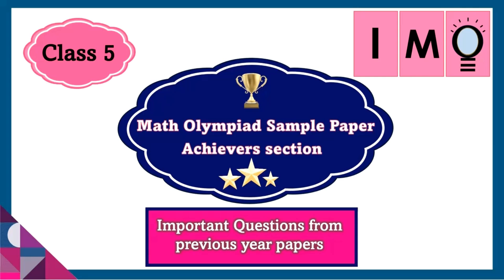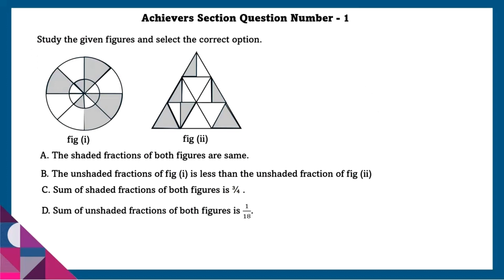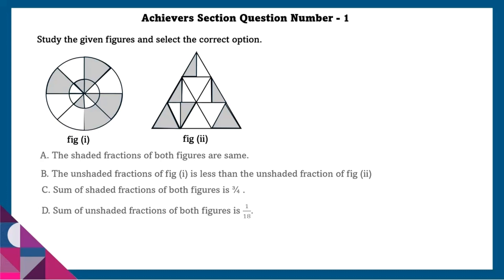Today we are going to be seeing Maths Olympiad sample papers, Achieve section. Achieve section question number 1: Study the given figures and select the correct option.